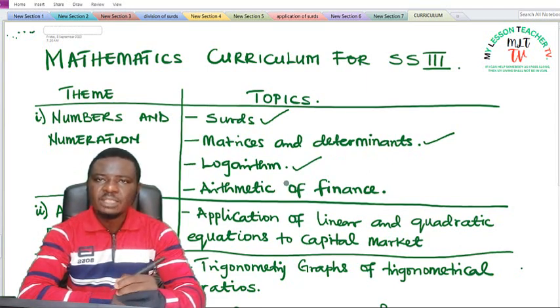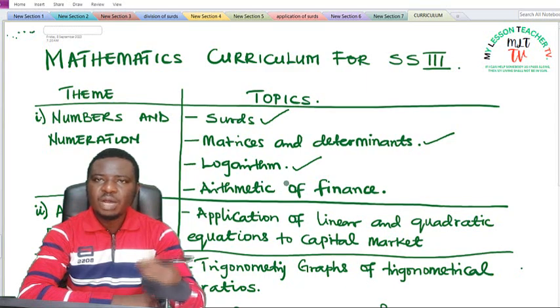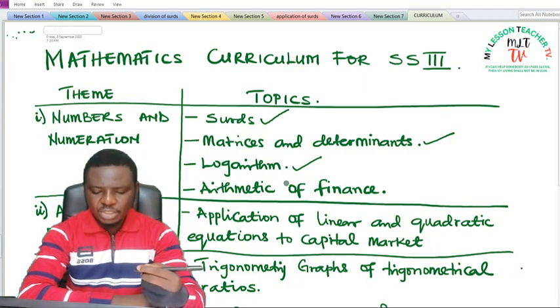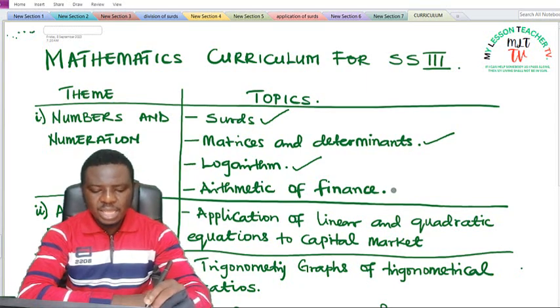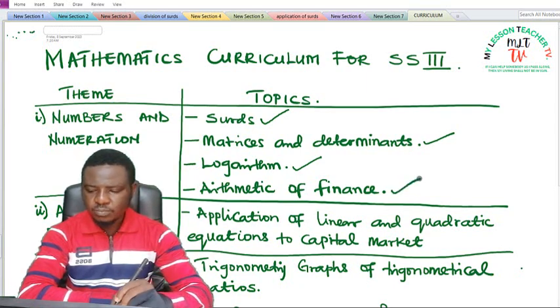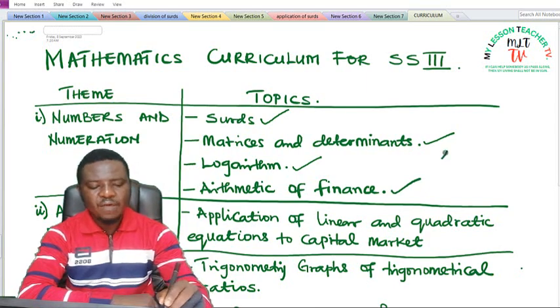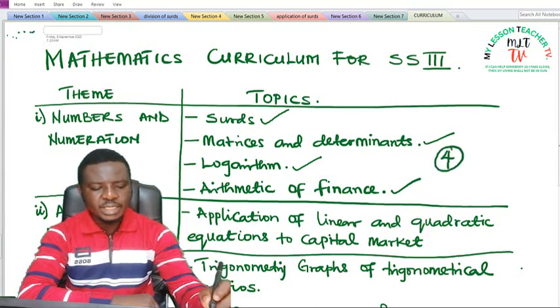But in SS3 we shall be looking at logarithms without the use of tables, laws of logarithms, as well as the applications. We shall also look at arithmetic of finance. That means that under Numbers and Numeration we have four topics to be treated in SS3.